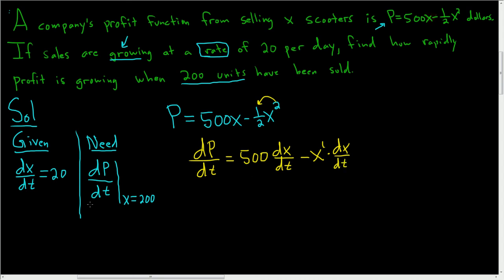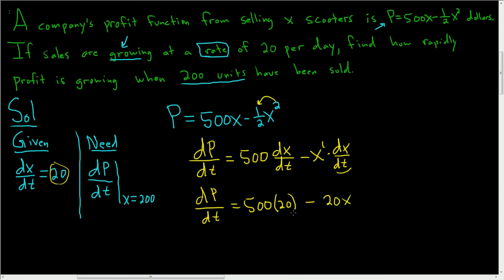Now let's replace dX/dt with 20. So dP/dt equals 500 times 20, minus 20X. Since 500 times 20 is 10,000, we have dP/dt equals 10,000 minus 20X.